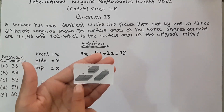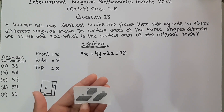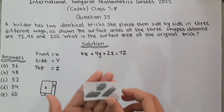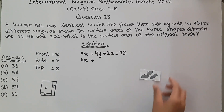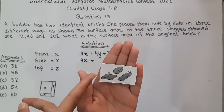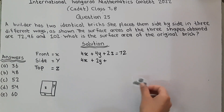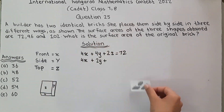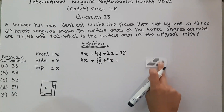For the second arrangement: we find 4 front faces (4X), then looking at the sides — there is 1 side on this face and 1 side on the other, giving 2Y. Then for the top faces, counting gives 4Z. So the equation is: 4X plus 2Y plus 4Z equals 96.